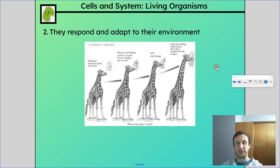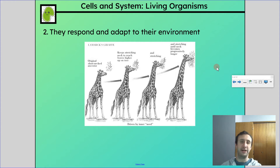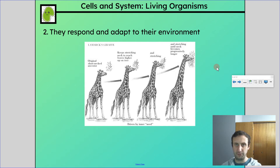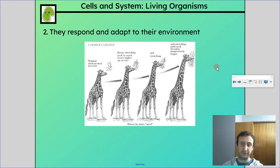Number two: living things respond and adapt to their environment. This is really two parts — things adapt over time to better suit their environment, but also they respond to things that happen in their environment and, as a result, change in order to increase their chance of survival.